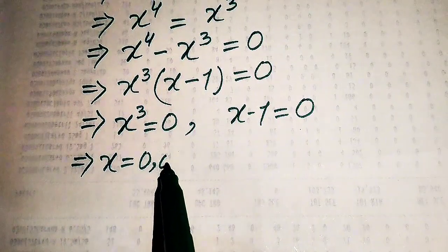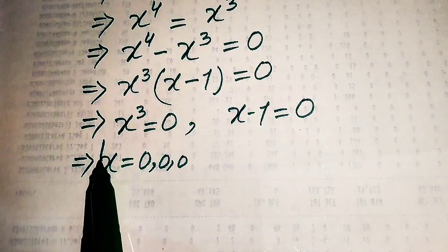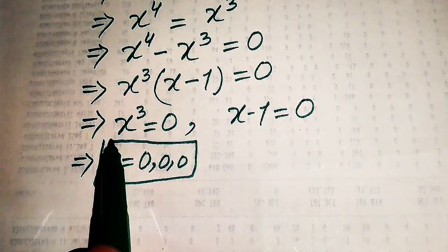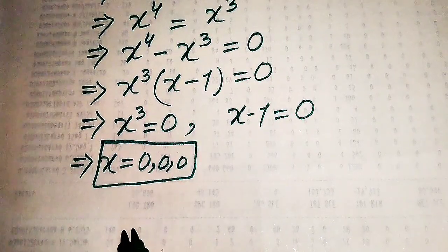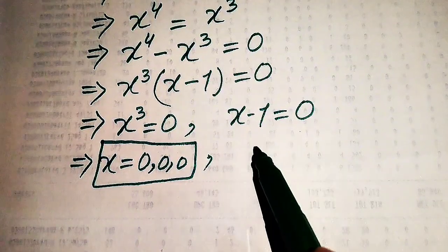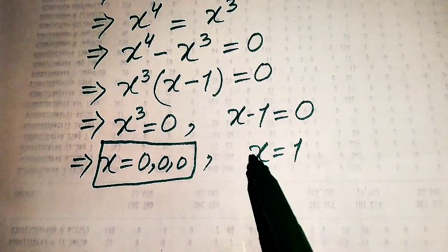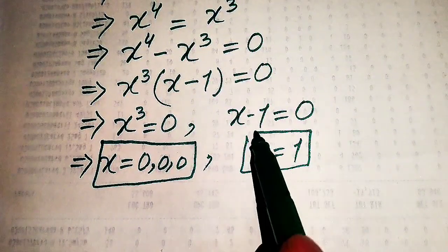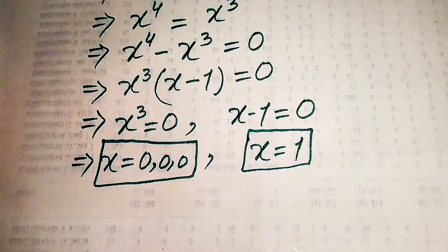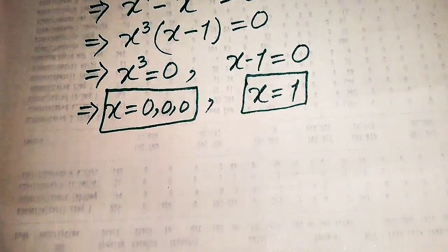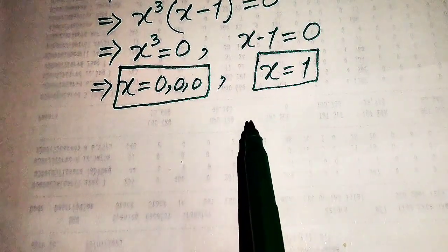From x³ equals 0 we get x equals 0, 0, 0 — three repeated roots of the given equation. From x minus 1 equals 0 we get x equals 1, which is one distinct root of the given equation. So from the first method we obtain two roots: 0 and 1.